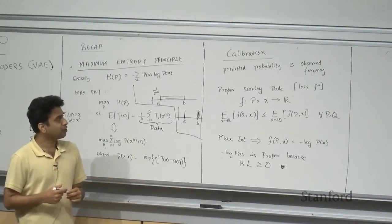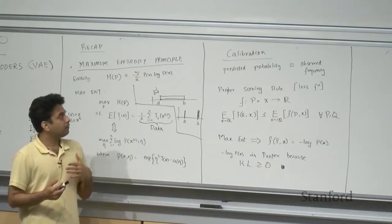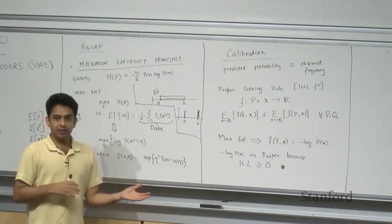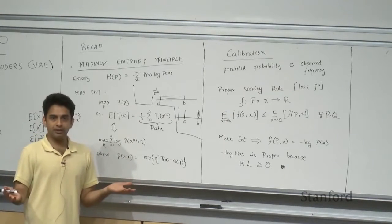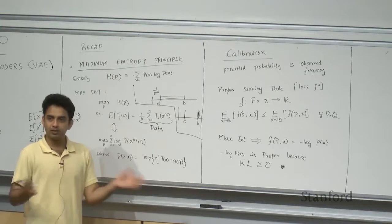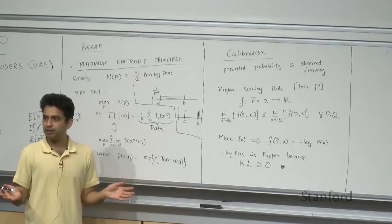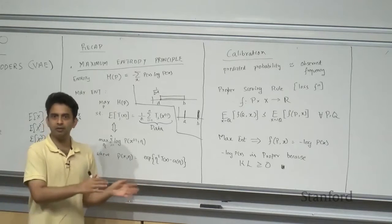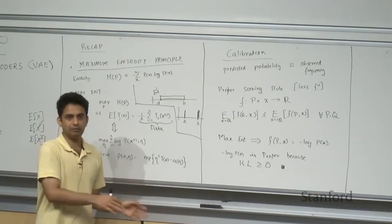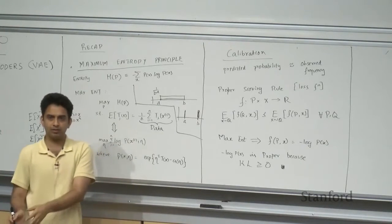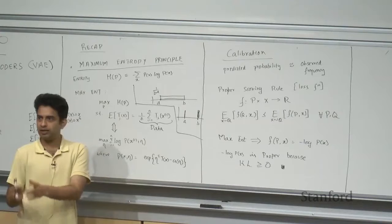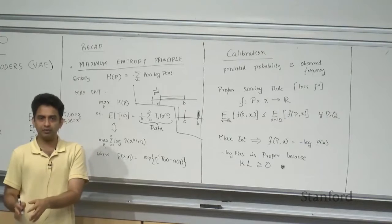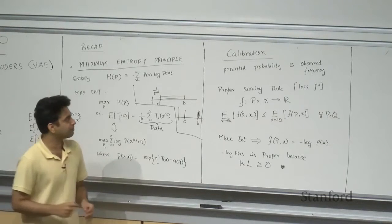We also saw that calibration and accuracy are orthogonal — one does not necessarily imply the other. You can have well-calibrated models with very poor accuracy, and vice versa.